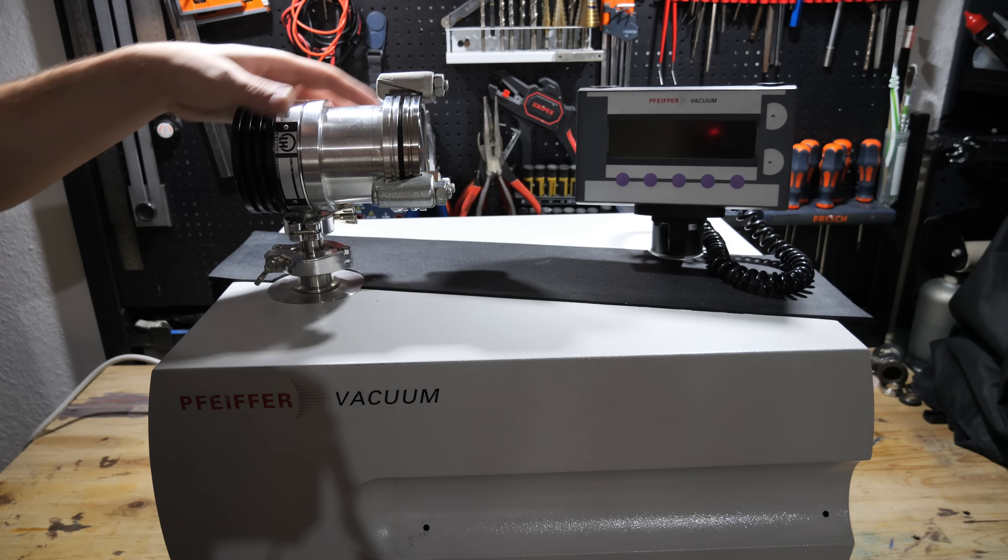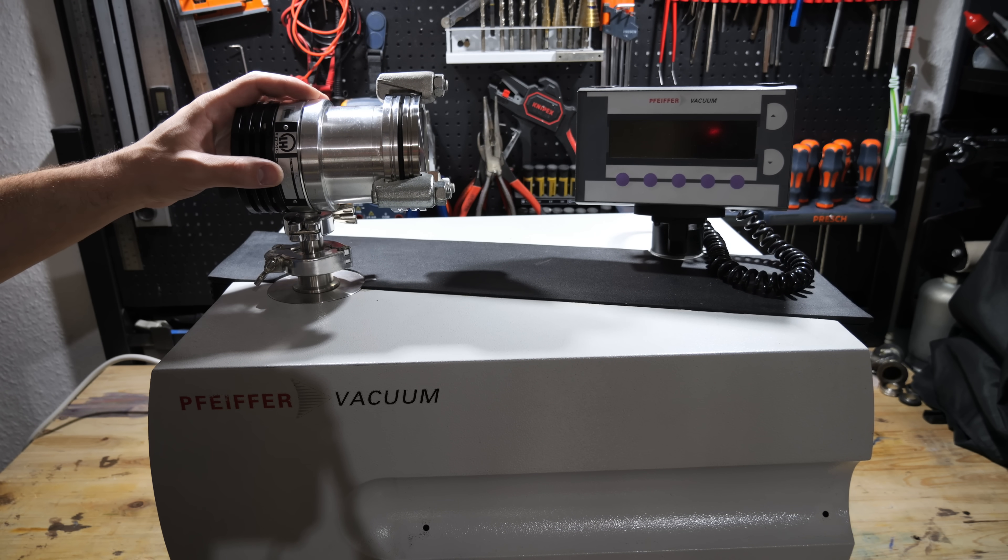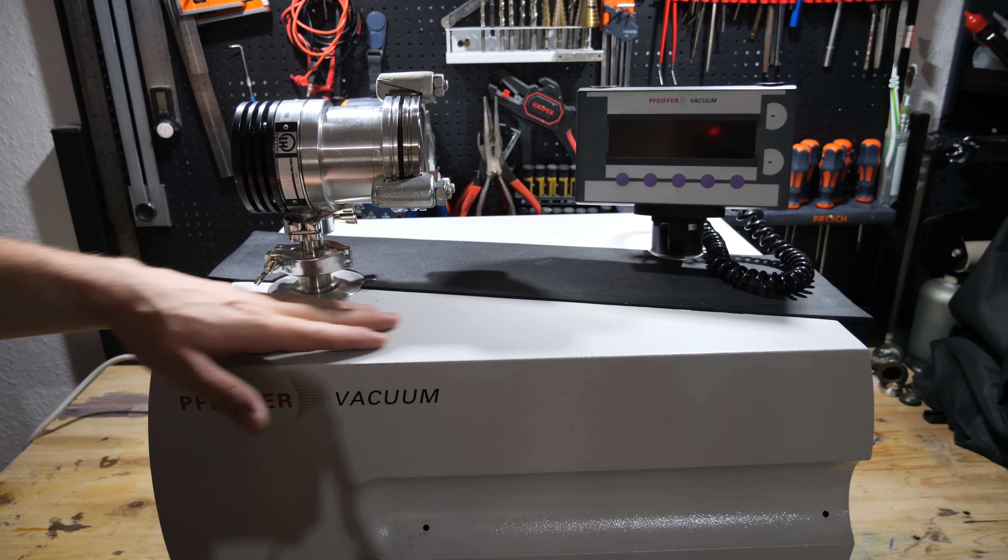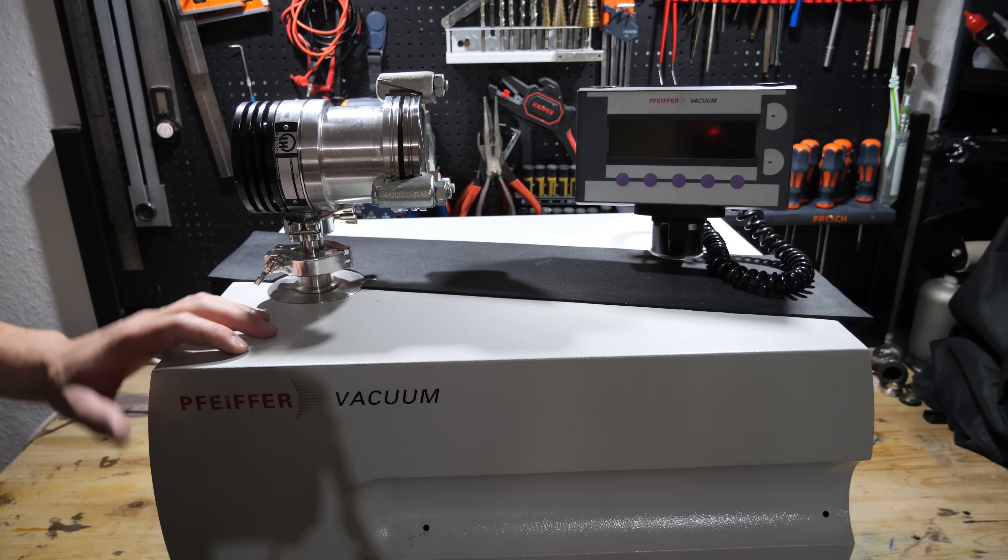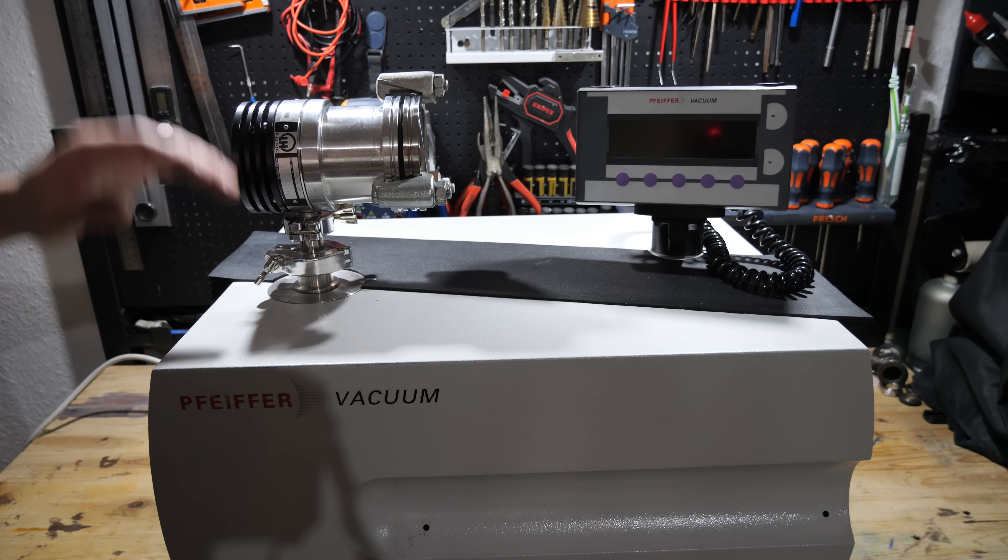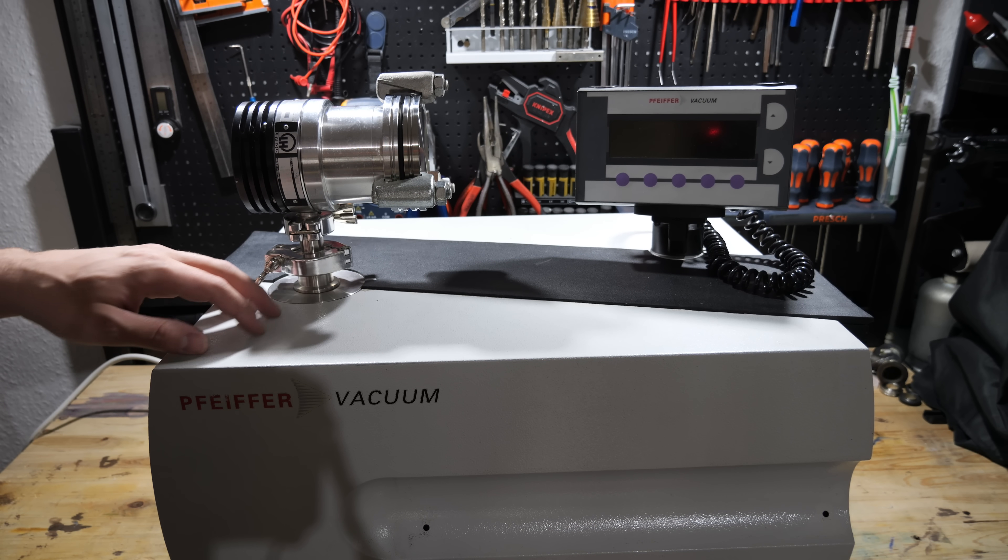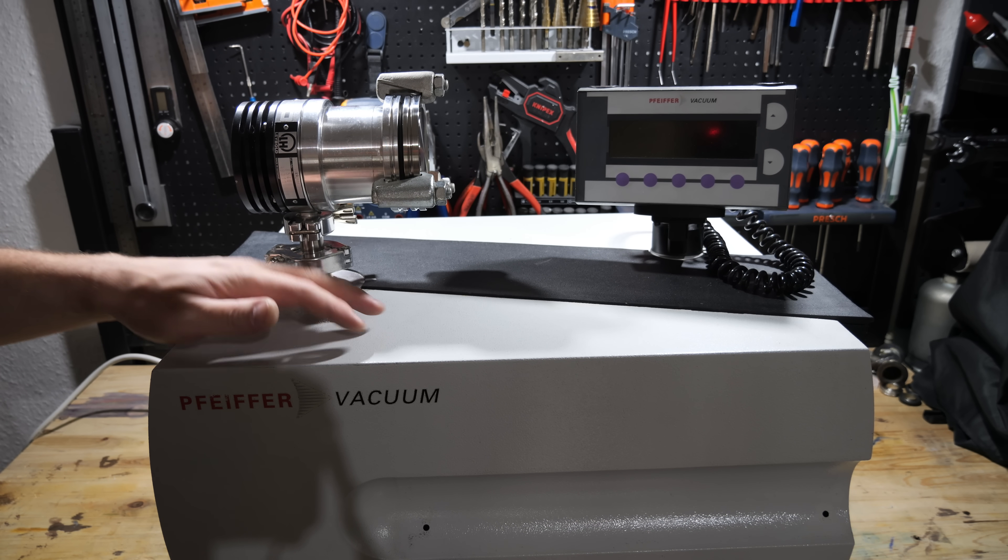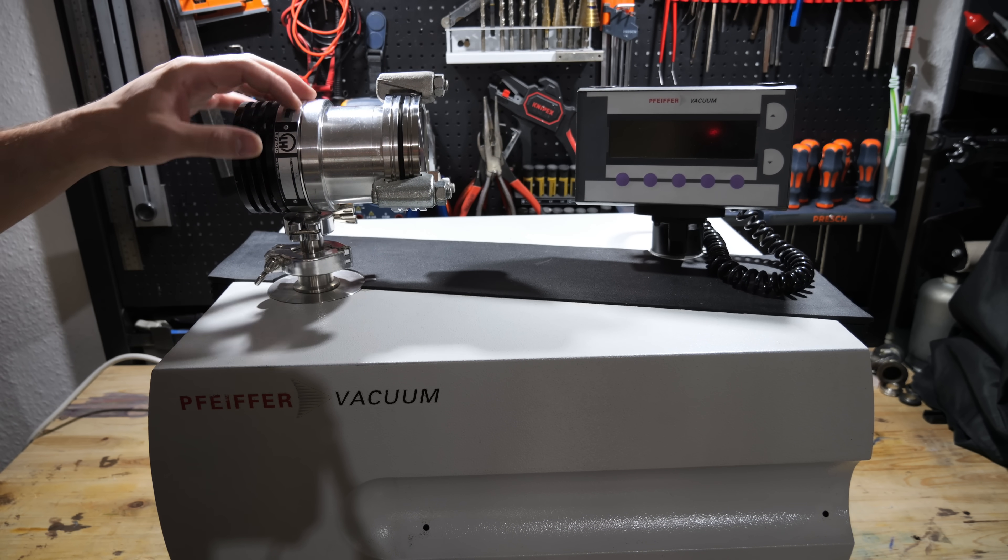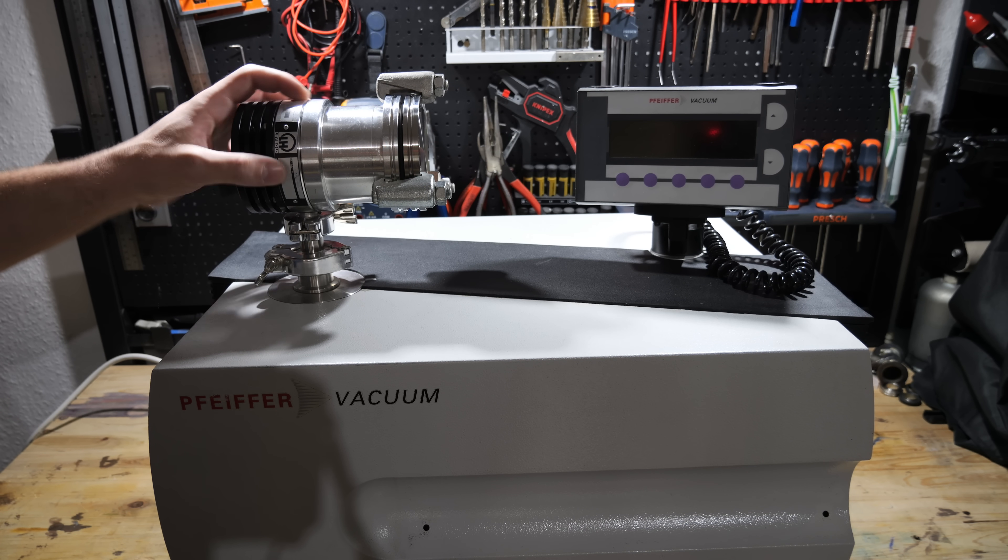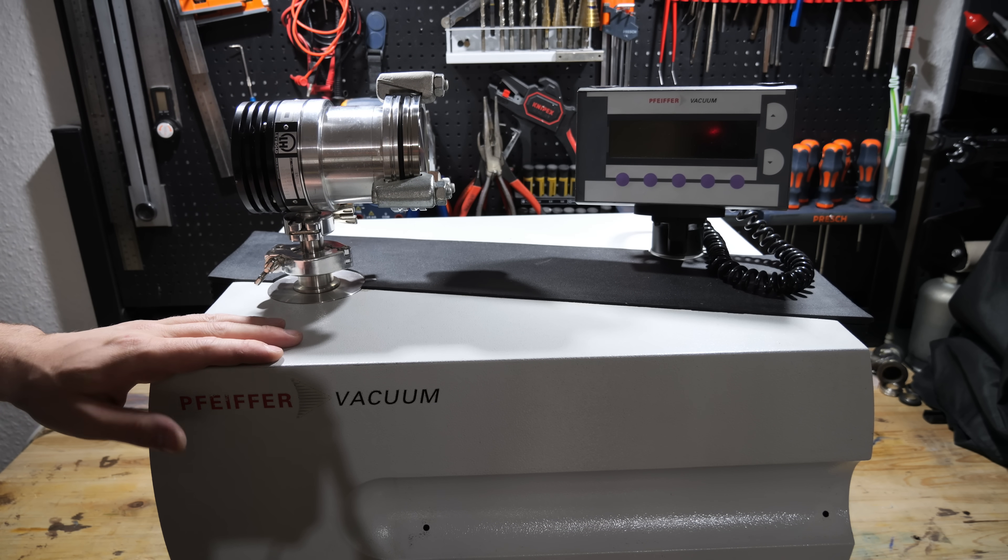Before I spin up the turbomolecular pump for the first time after reassembling it, I will check for any leaks using my helium leak detector I repaired in an earlier video. And I'm just amazed at how much use I've gotten out of this piece of equipment since I repaired it or basically cleaned it. We will pull a vacuum on it, spray some helium around the joints and flanges, and see if we have any leaks.